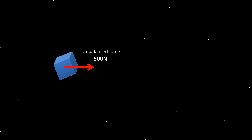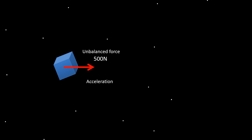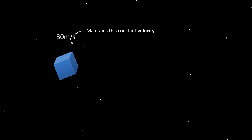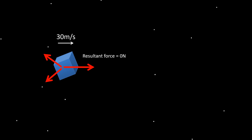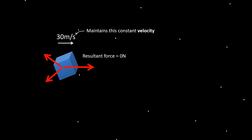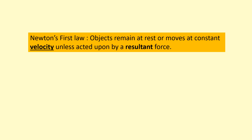Now imagine a stationary object with an unbalanced resultant force applied — it starts accelerating in the direction of the resultant force. Say it reaches 30 meters per second, then we remove that force. It maintains that velocity — same speed and direction forever. Even if we then apply more forces that add up to zero, it just carries on at 30 meters per second.